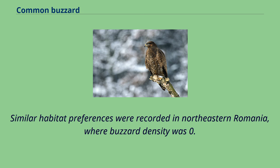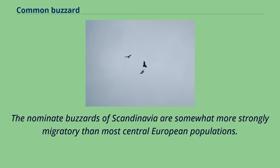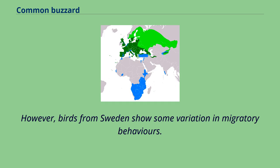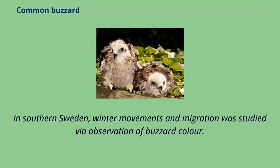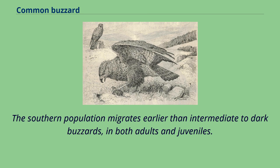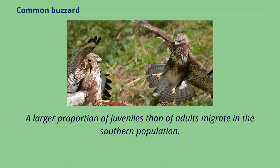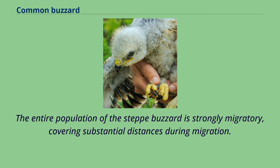The nominate buzzards of Scandinavia are somewhat more strongly migratory than most Central European populations. A maximum of 41,000 individuals have been recorded at one of the main migration sites within southern Sweden at Falsterbo. White individuals were substantially more common in southern Sweden rather than further north in their Swedish range. The southern population migrates earlier than intermediate to dark buzzards, in both adults and juveniles. The entire population of the steppe buzzard is strongly migratory, covering substantial distances. In no part of the range do steppe buzzards use the same summering and wintering grounds.